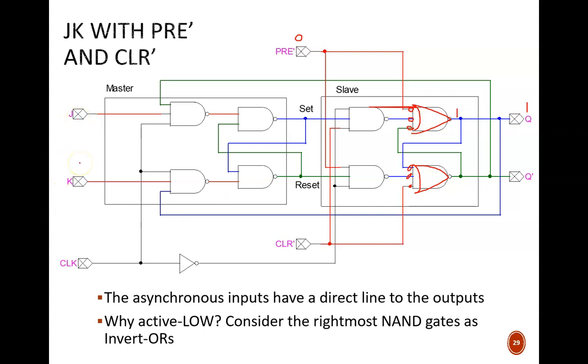This schematic explains why the asynchronous inputs are usually active low. I suppose you could make them active high, but then you'd need to add in an extra NOT gate. This other wire branching off from Q forces this NAND gate to output one, regardless of its other inputs. In effect, it cuts off any possible reset signal coming from the master latch.